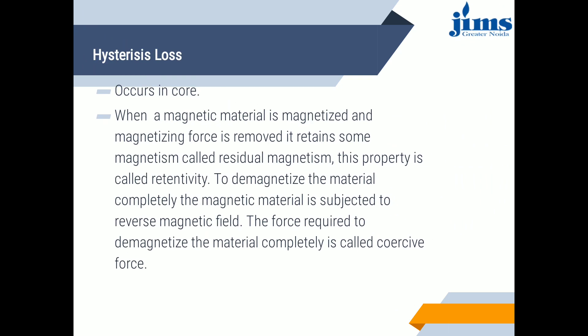There are two types of losses: hysteresis loss and eddy current loss. Hysteresis loss is due to the hysteresis curve in the iron core. When a magnetic material is magnetized and the magnetizing force is removed, it retains some magnetism called residual magnetism; this property is called retentivity. To de-magnetize the material completely, it is subjected to a reverse magnetic field. The force required to de-magnetize the material completely is called coercive force. Note that the transformer is a static machine and therefore has no friction or windage losses.